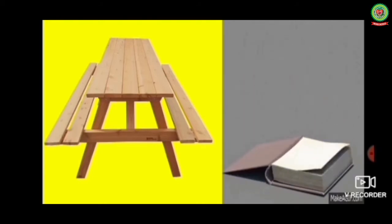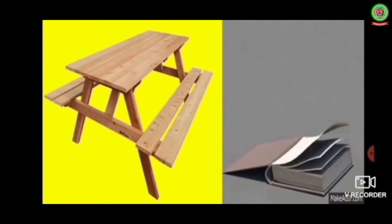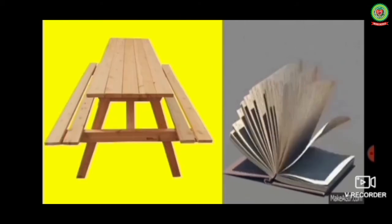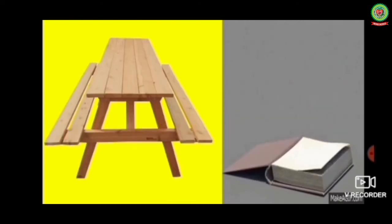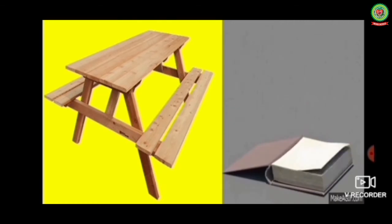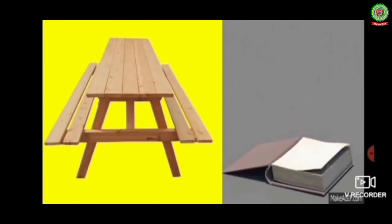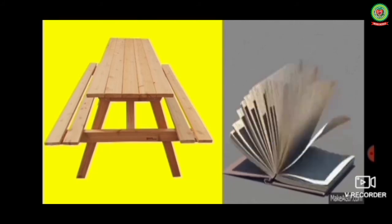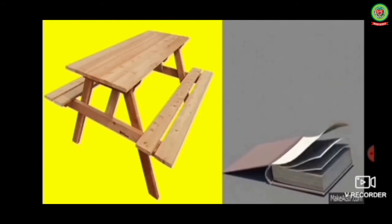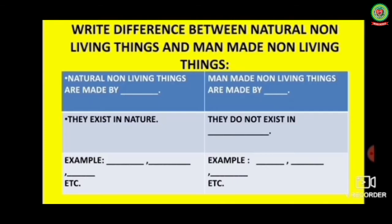Next, benches are also man-made things — they are used to sit on. The next picture is of a book. Daily we use books in our classes, and the main use of books and copies is to write information and instructions given by the teacher. These are man-made things and they do not exist in nature.